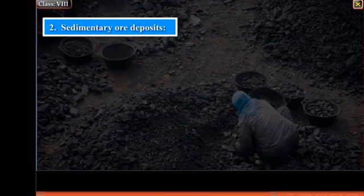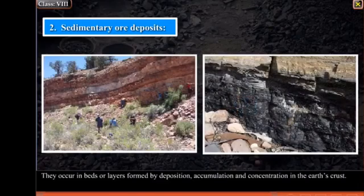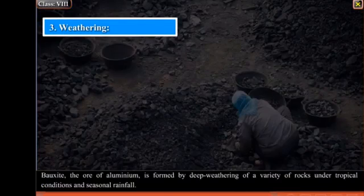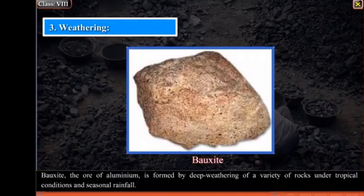Sedimentary Ore Deposits: They occur in beds or layers formed by deposition, accumulation, and concentration in the earth's crust. Coal and some grades of iron ore are formed in this manner as a result of long periods under heat and pressure. Bauxite, the ore of aluminium, is formed by deep weathering of a variety of rocks under tropical conditions and seasonal rainfall.